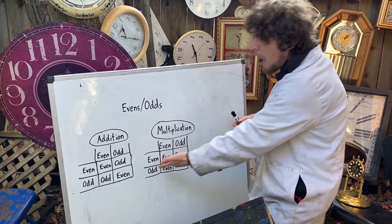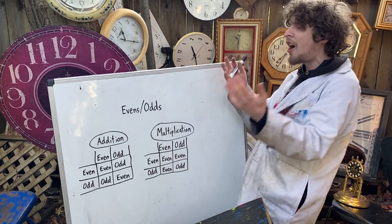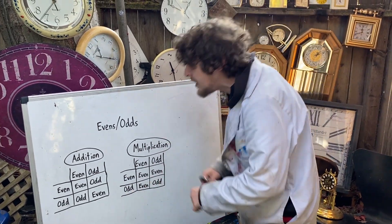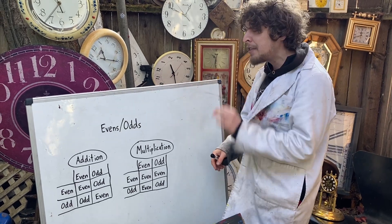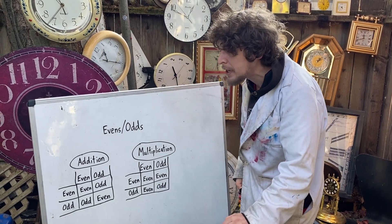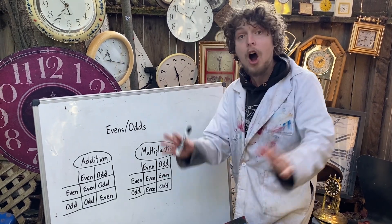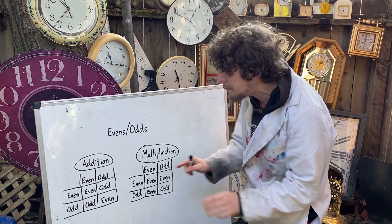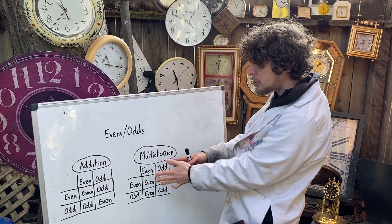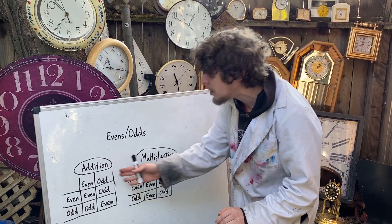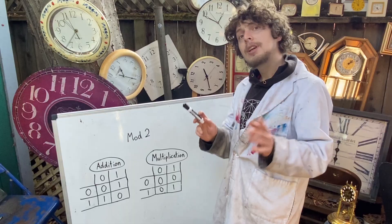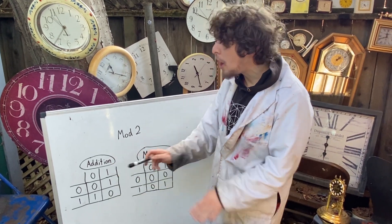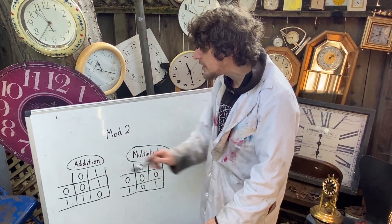But odd times odd is odd. These tables hold true for any even or odd number, and they also hold true for something called mod 2. Watch as we replace all of these evens with zeros and odds with ones.